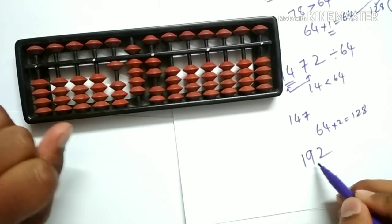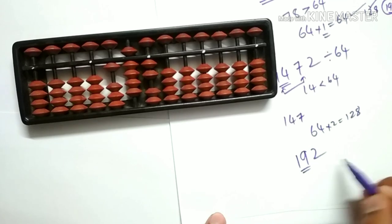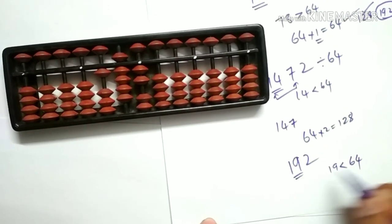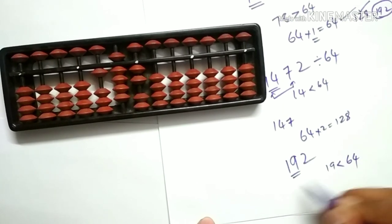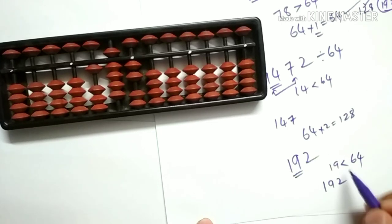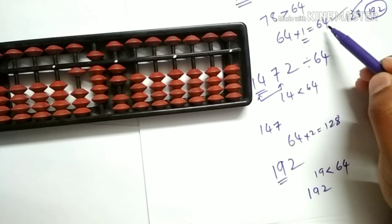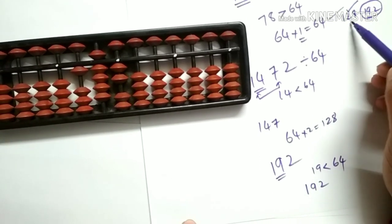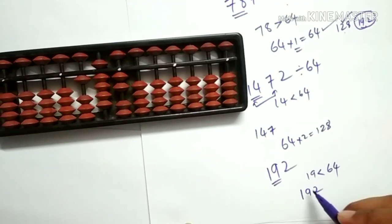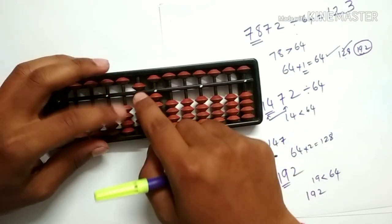Let's check for 192. Again check for the first 2 digits — here 19 is less than 64, so we will go for the first 3 digits. The first 3 digits are 192. Let's check for 192 in the 64 table. We have already seen that 64 into 1 is 64, into 2 is 128, into 3 is 192. So let's use 192 directly. Because 64 into 3 is 192, let's write 3 here and subtract 192 directly.